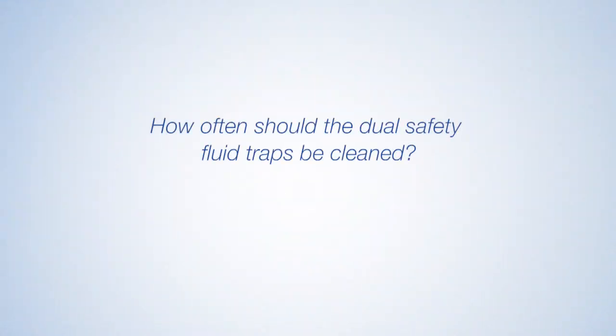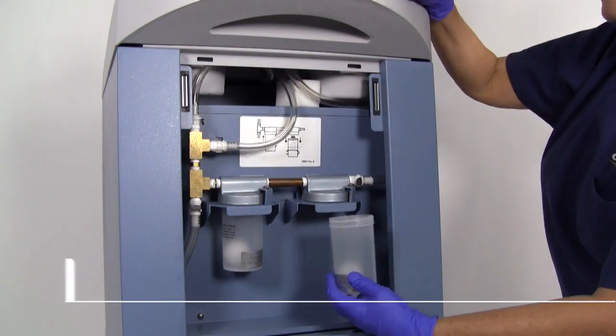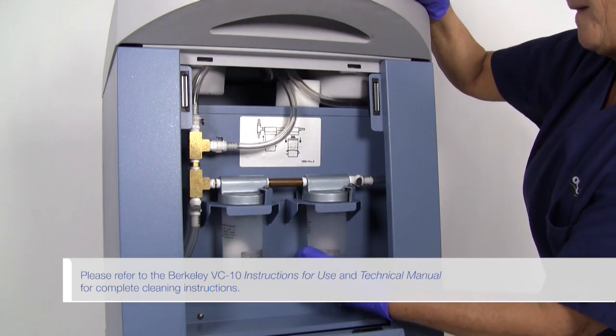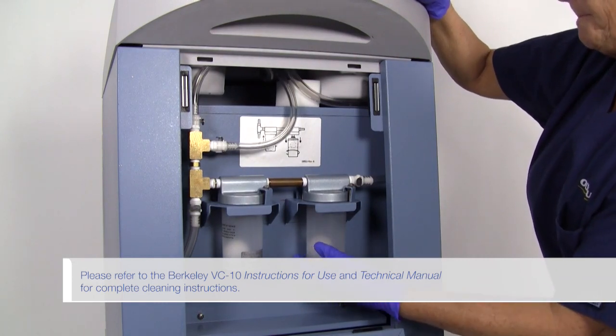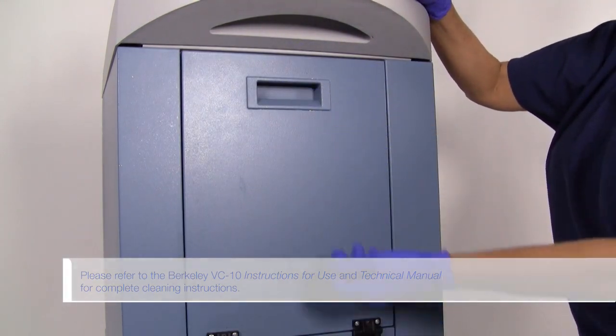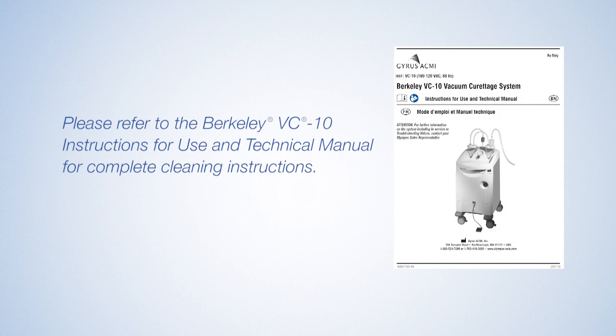How often should the dual safety fluid traps be cleaned? The trap should be checked and cleaned periodically, and especially whenever any fluid reaches the disposal filter. The unit should not be operated with any fluid in either of the fluid overflow collection jars. Please refer to the Berkeley VC-10 instructions for use and technical manual for complete cleaning instructions.